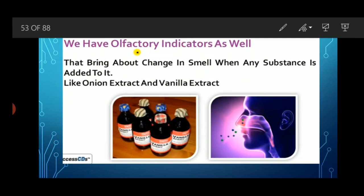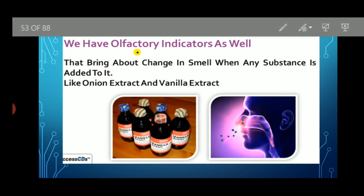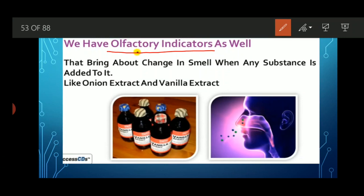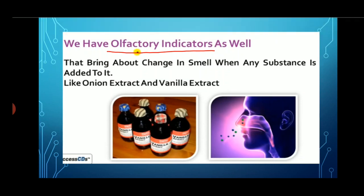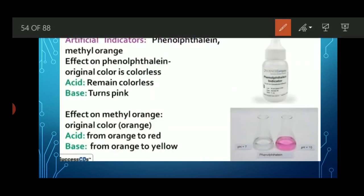We also have olfactory indicators. Olfactory indicators are those whose smell immediately changes when they come in contact with an acid or base. For example, with onion, not only does the color change but the smell also changes when it contacts a base. Similarly, vanilla essence immediately changes its smell when it comes in contact with any base or acid. Those indicators which change their smell upon contact with any acid or base are known as olfactory indicators.